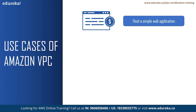You can help secure the website by creating security group rules which simultaneously prohibit the web servers from initiating outbound connections to the internet. This means you can control your data traffic in and out of your VPC. You can create a VPC that supports this use case by selecting 'VPC with a single public subnet only' from the Amazon VPC console.